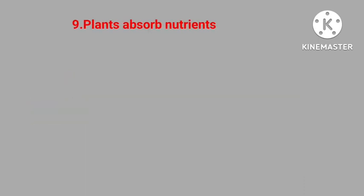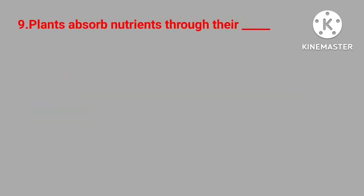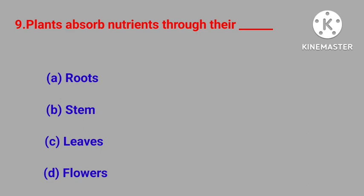Question number nine: plants absorb nutrients through their — roots, stem, leaves, flowers. Correct answer is roots.